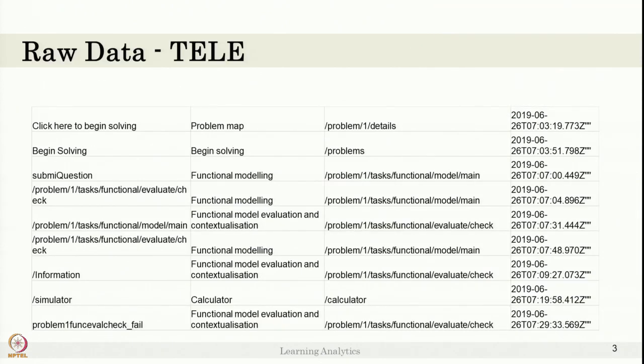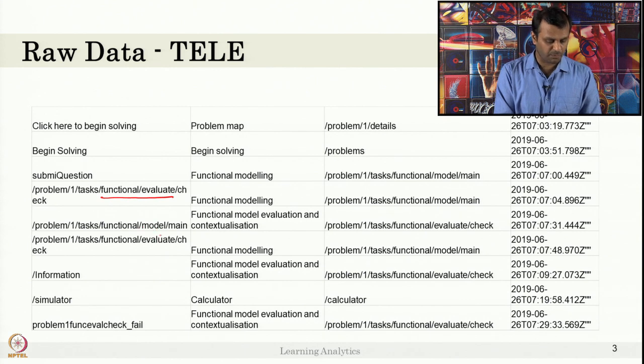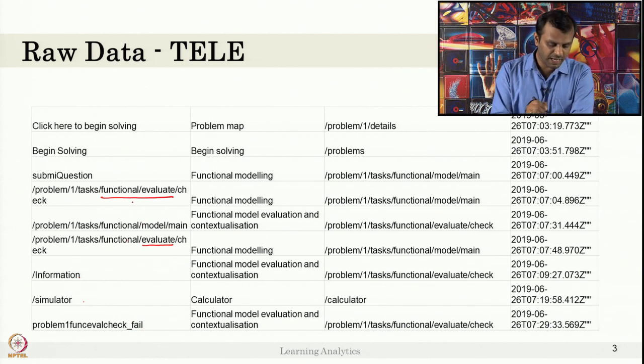This is the sample raw data we collected from TELE. Here is the raw data. The first action is the user readable action, like this user started solving the problem, then he started solving problem, then he's submitting some questions, then he's in a functional model checking something. After checking the functional model, the student moved to the main model, that is the main problem page. After that, he went to the evaluate sub-problem, then he went to information simulator. The student is moving towards different sub-tasks in the main problem page.